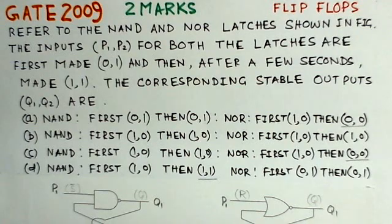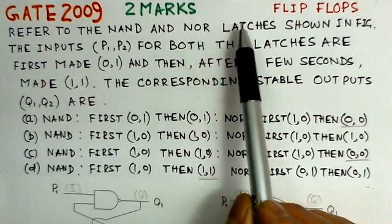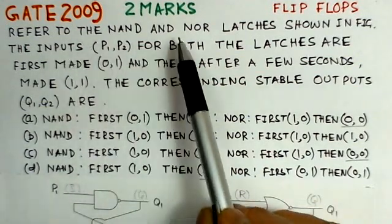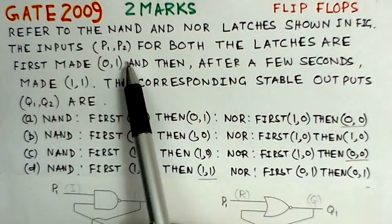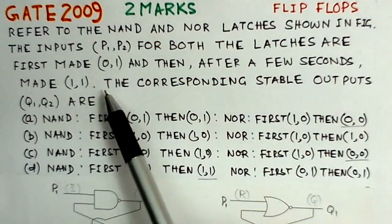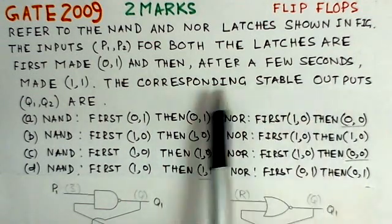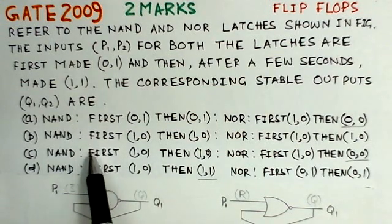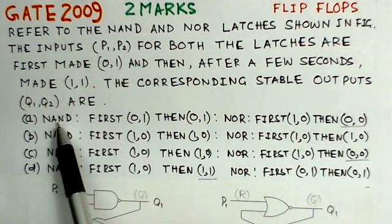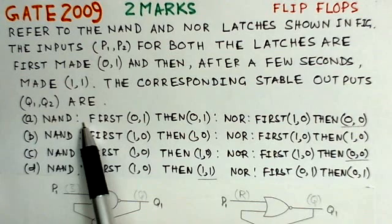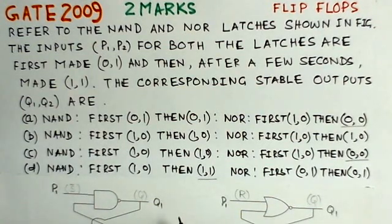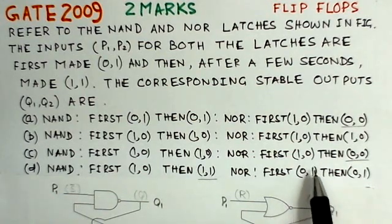Now we will see the first problem, which is GATE 2009 worth two marks, on latches and flip-flops. The problem states: referring to the NAND and NOR latches shown in the figure, inputs P1 and P2 for both latches are first made 0,1 and then after a few seconds made 1,1. The corresponding stable outputs Q1 and Q2 are to be found from four possible combinations given for the NAND latch and NOR latch outputs.